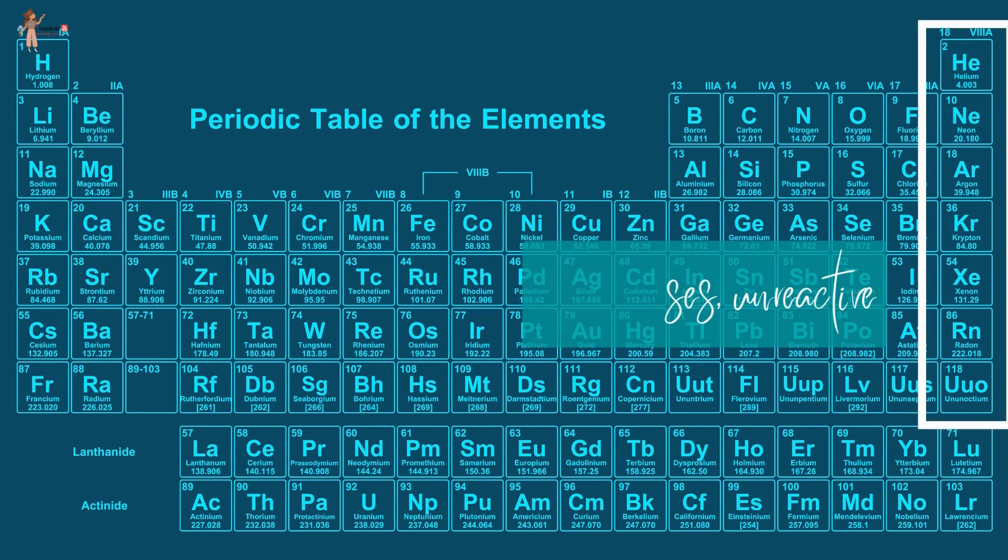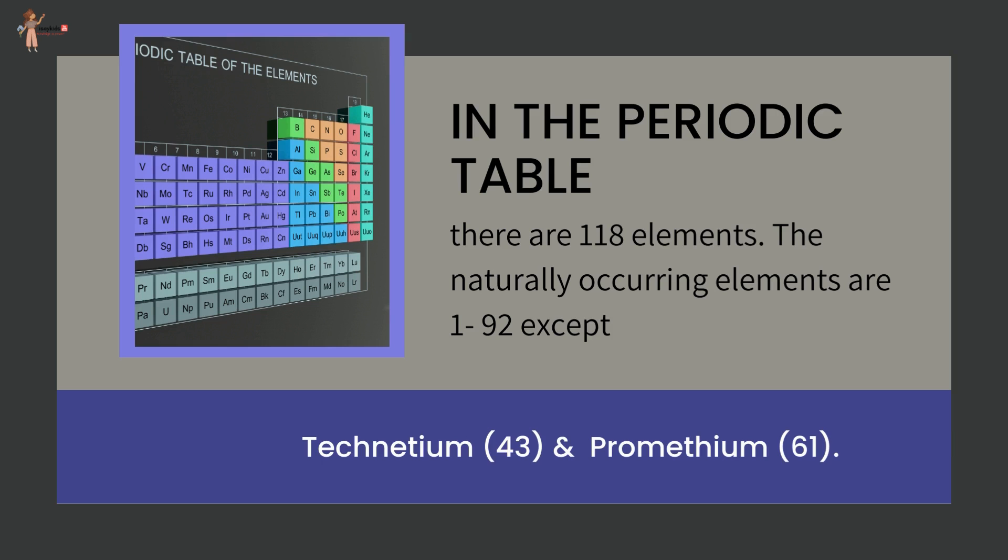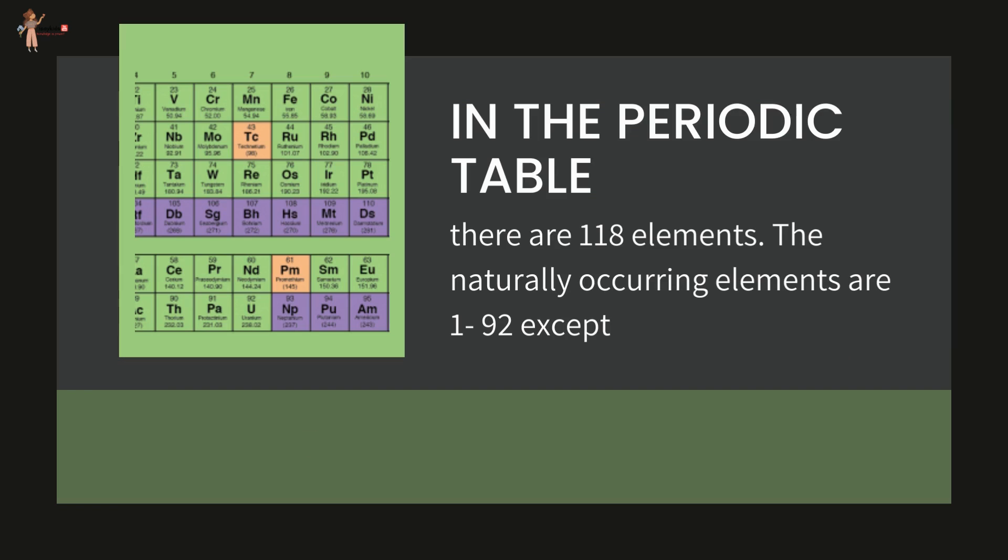There are 118 elements. The naturally occurring elements are 1 to 92, except technetium and promethium.